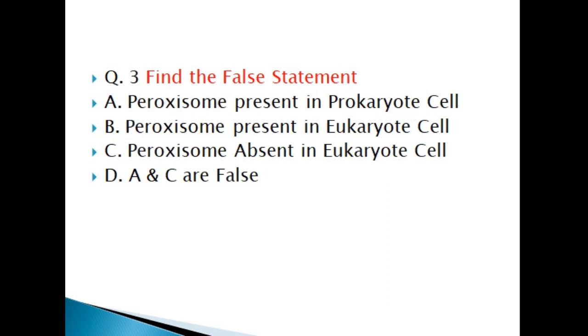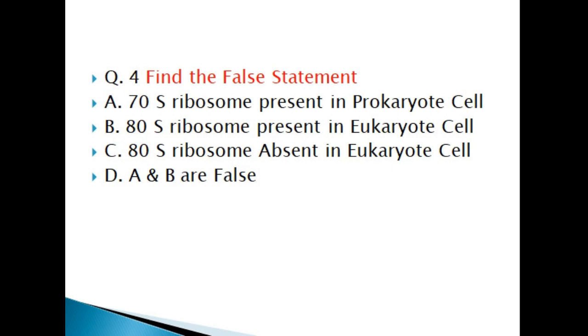Question 3: Find the false statement. A) Peroxisome present in prokaryote cell, B) Peroxisome present in eukaryote cell, C) Peroxisome absent in eukaryote cell, D) A and C are false.